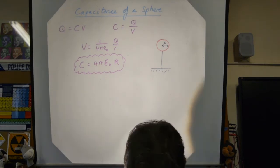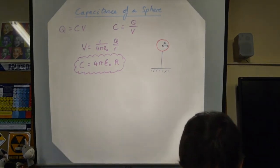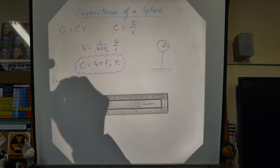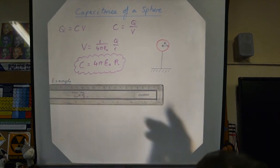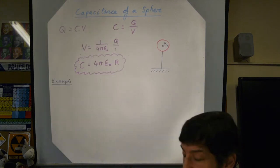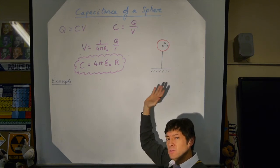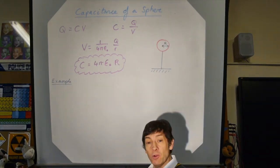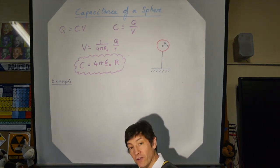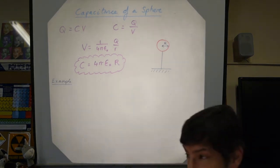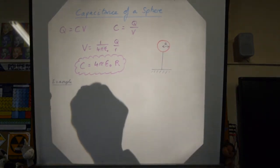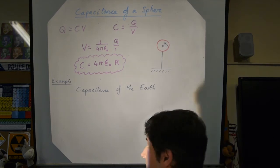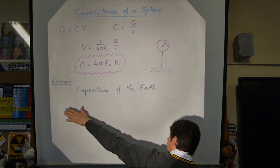What's the most famous isolated sphere we deal with on a daily basis? The Earth! When you discharge something you earth it — you send electrons off onto the Earth's surface. So why don't we work out the capacitance of the Earth?